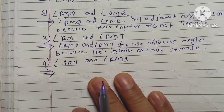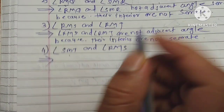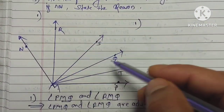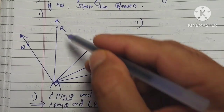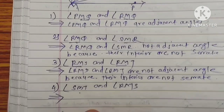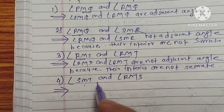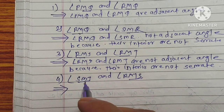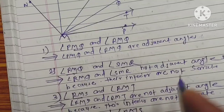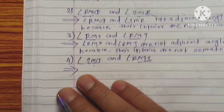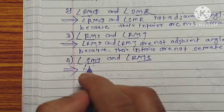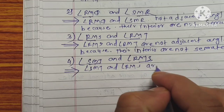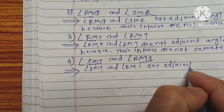Let's go to the last pair: angle SMT and angle RMS. Looking at the figure, the common interior, common arm, and common vertex are all there, and the separate interior is also there. Hence angle SMT and angle RMS are adjacent angles.